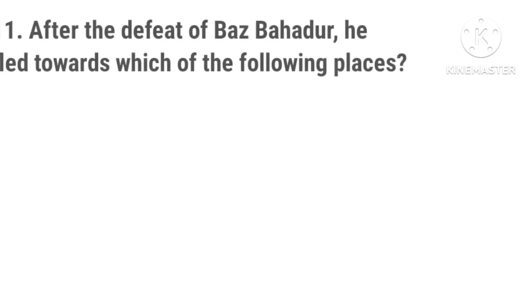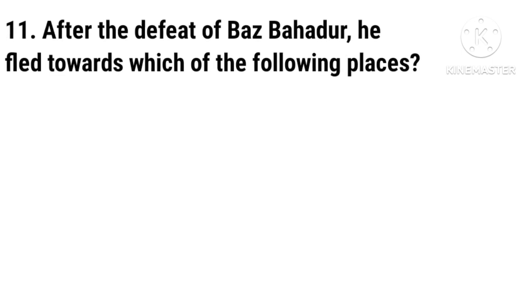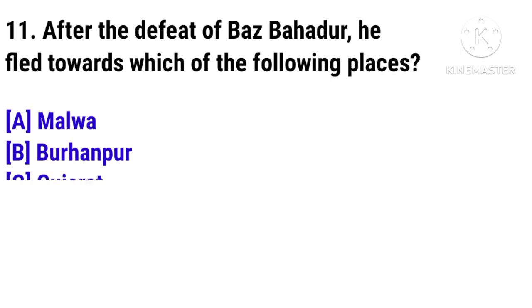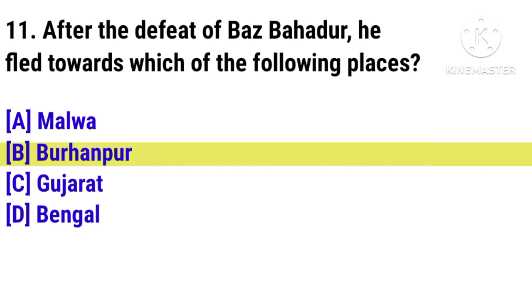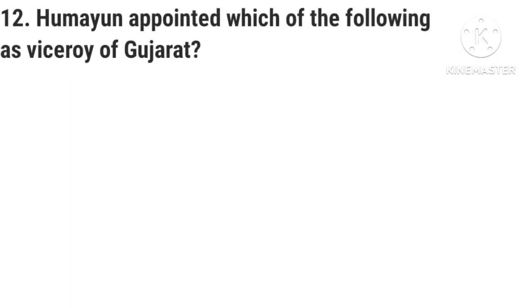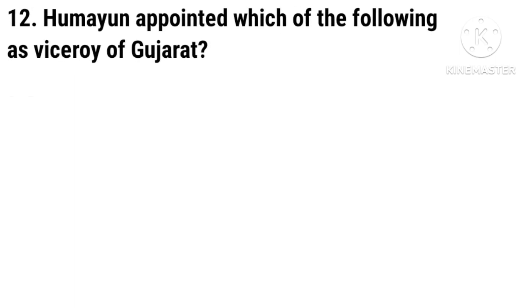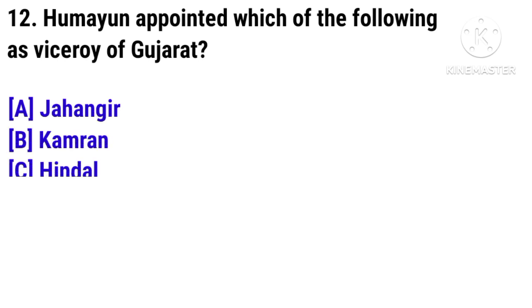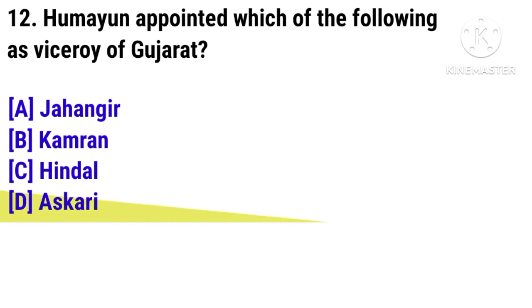Question 11: After the defeat of Baz Bahadur, he fled towards which of the following places? Question 12: Humayun appointed which of the following as Viceroy of Gujarat? The answer is Askari.